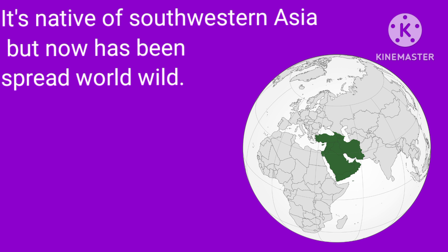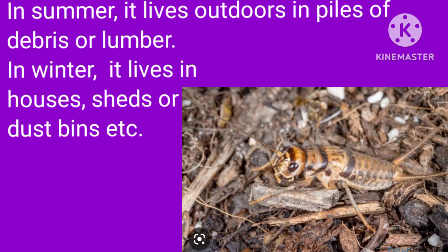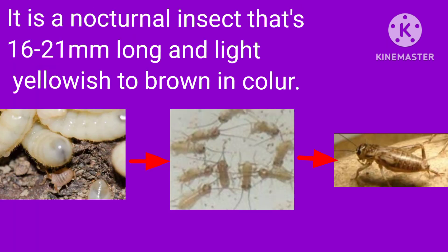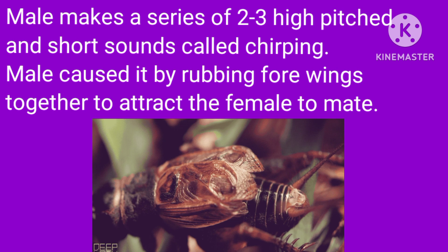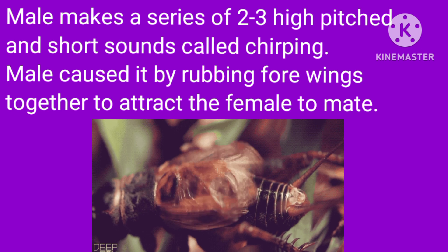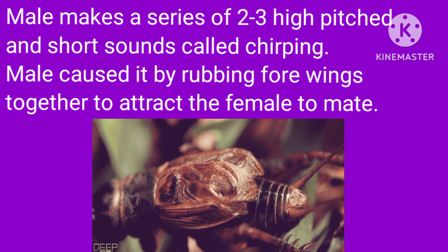It has now spread worldwide. In summer it lives outdoors in piles of tarps or lumber. In winter it lives in houses, sheds, or dustbins. It is a nocturnal insect that is 16–21 mm long and light yellowish to brown in colour. The male makes a series of 2–3 high-pitched, short sounds called chirping, produced by rubbing its forewings together to attract the female to mate.